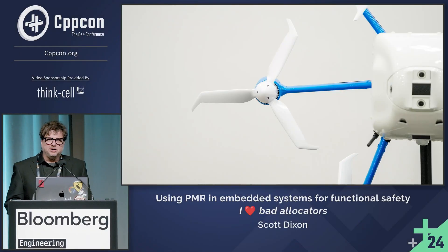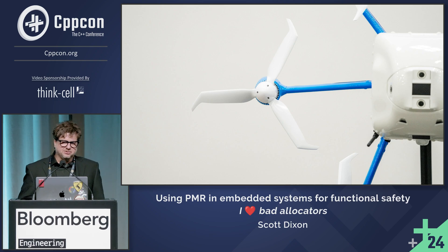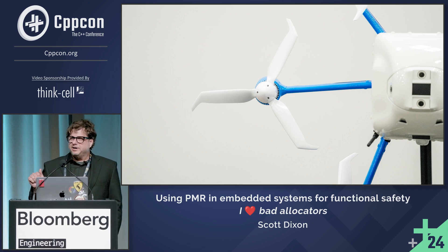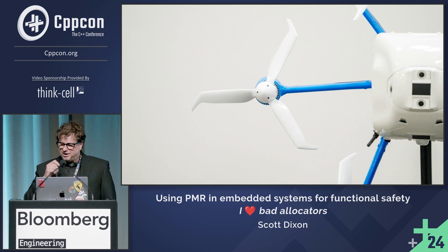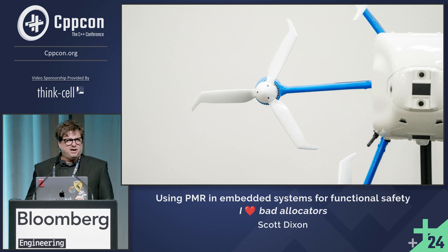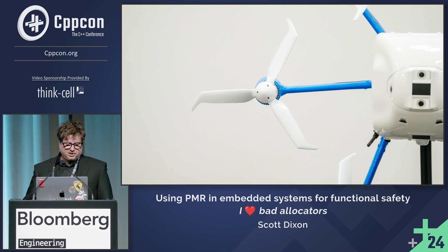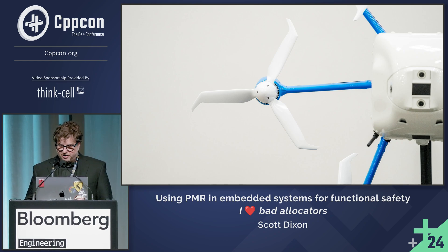In safety-critical systems, dynamic memory is often prescribed for reasons that you probably haven't thought deeply about — and shame on you. We thought a lot about it, and one of the things we noticed is C++17's PMR has a set of design patterns that are really compelling and useful in firmware for solving some of these problems. To understand what they are, let's first talk about dynamic memory.